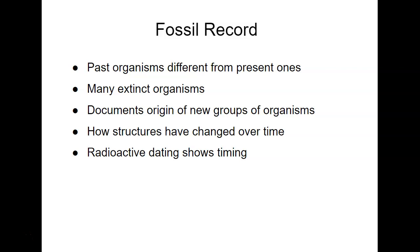Going back to the fossil record as overall evidence of evolution — the ones that lived a long time ago, like dinosaurs, are very different from what we have today. Many are also extinct, meaning they don't exist anymore. The opposite of extinct is extant, and we have lots of extant species. Looking at the fossil record over time, you can see when new organisms or new groups appear, and you can look at how structures have changed. You can apply science to it through radioactive dating to put a number on it — this is where carbon dating comes into play.